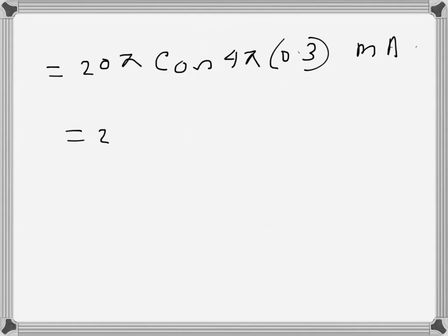That can be written as 20π cos 1.2π in radians, milliamps. Once we do this, we get approximately minus 50.81 milliampere. There might be some rounding error, but that's what it is. This negative means that the current is in the other direction.